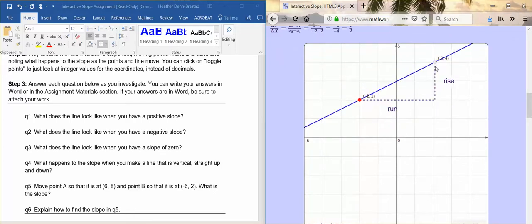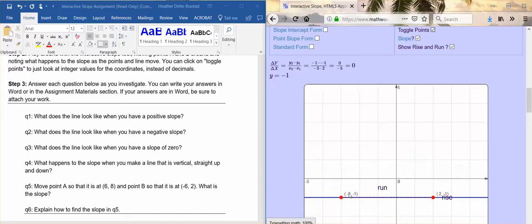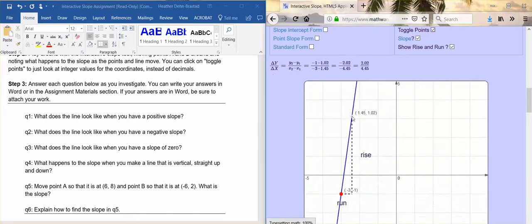It asks you what does the line look like when you have a slope of zero. I did not ever get zero here, so I would need to continue to play around with this until I get a slope of zero. The next one is what happens to the slope when you make a line that is vertical, which I just did.